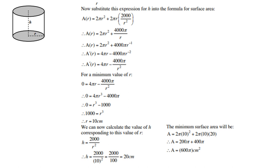Now we can calculate the value of h because we have r. So the corresponding value to this value r: h is 2000/r². Therefore, 2000/10², which is 20 centimeters.